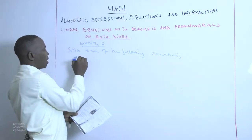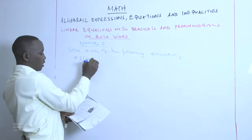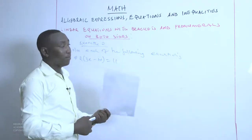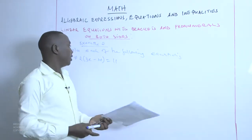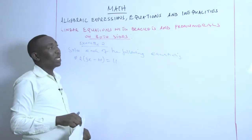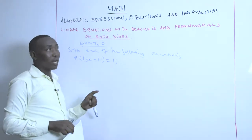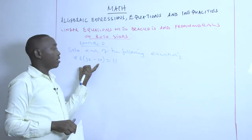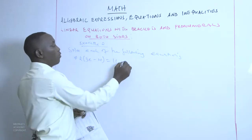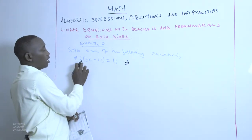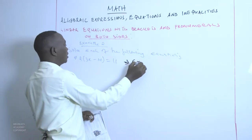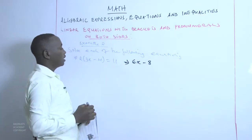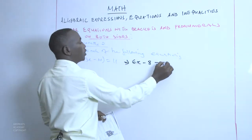Example M: 2 into (3X subtract 4) equals 11. This is an equation that has pronumerals on only one side. We solve it by first expanding the brackets. When we open the brackets, we get 2 multiplied by 3X, which is 6X, subtract 2 multiplied by negative 4, which gives us negative 8, equals 11.